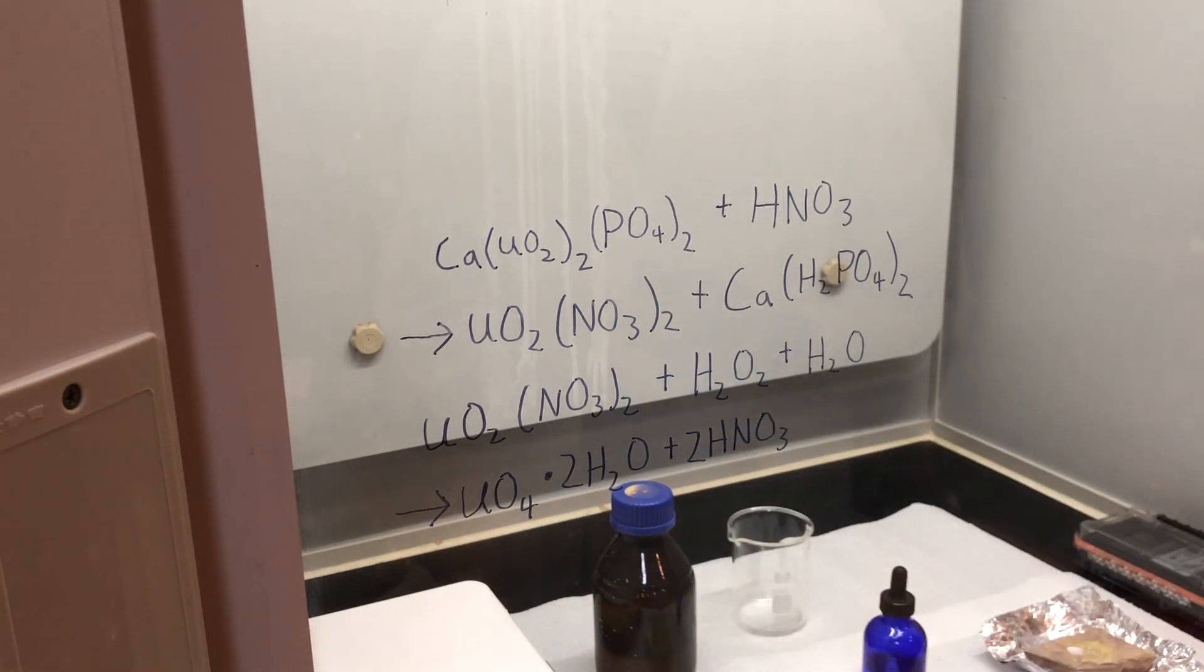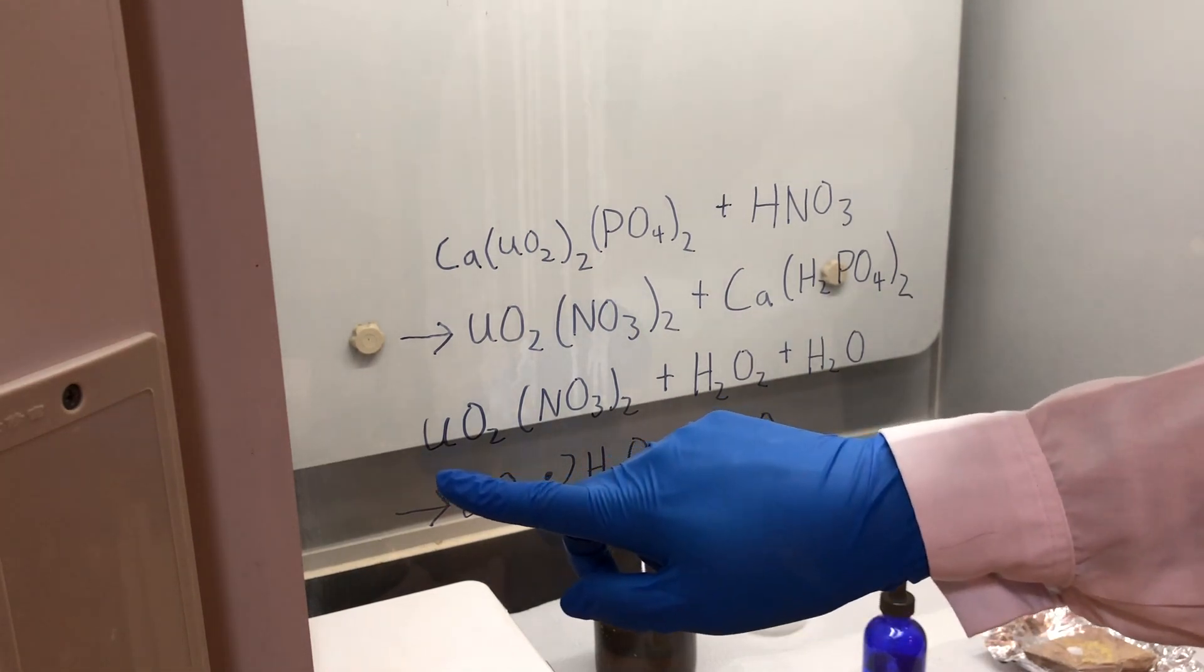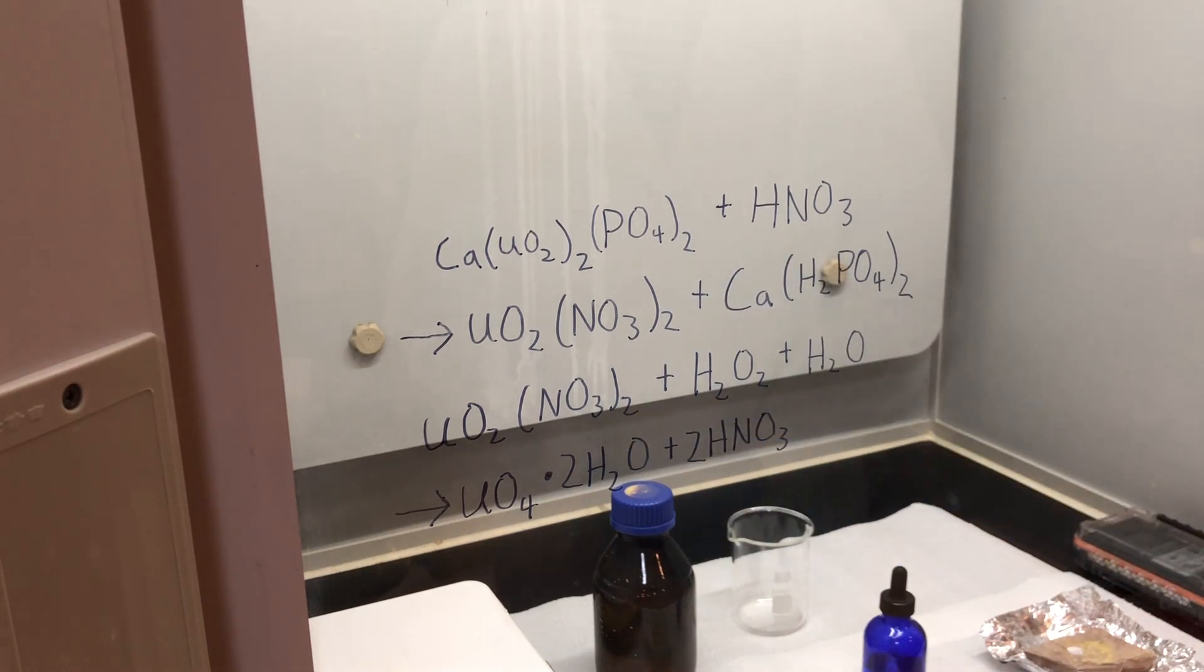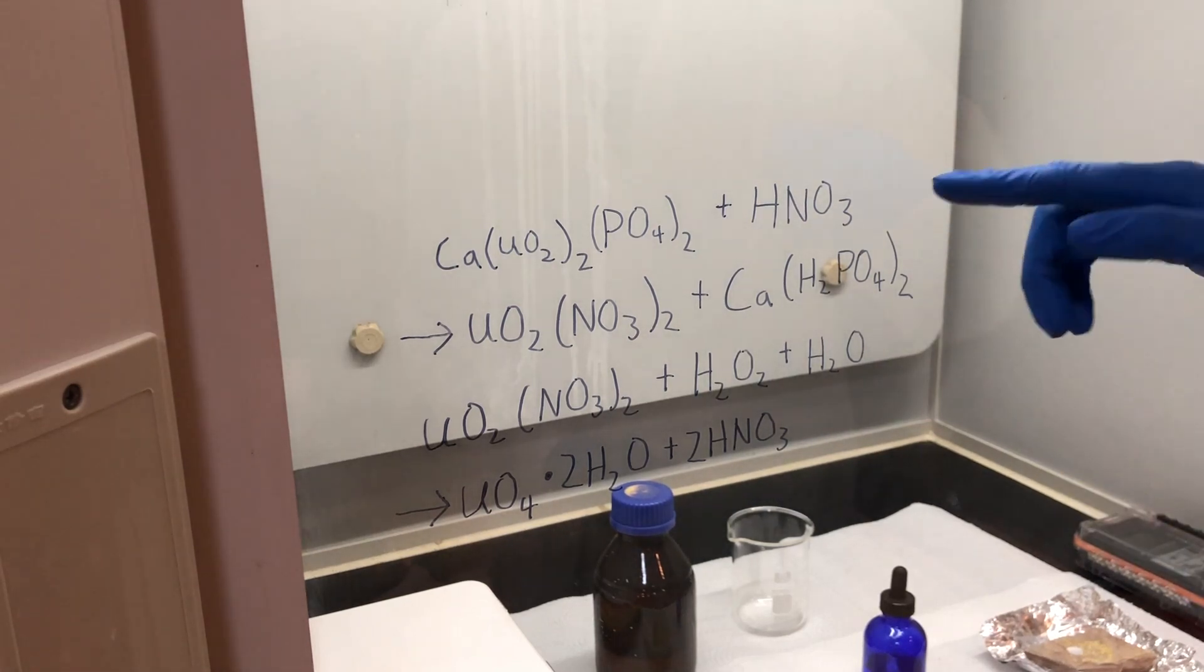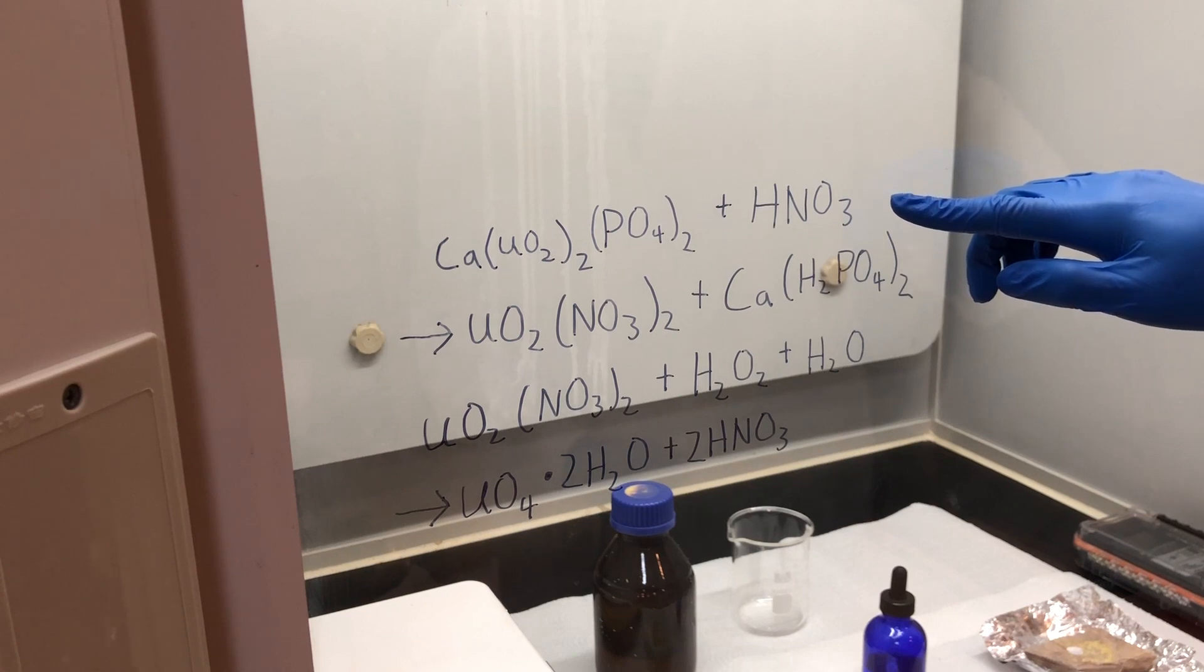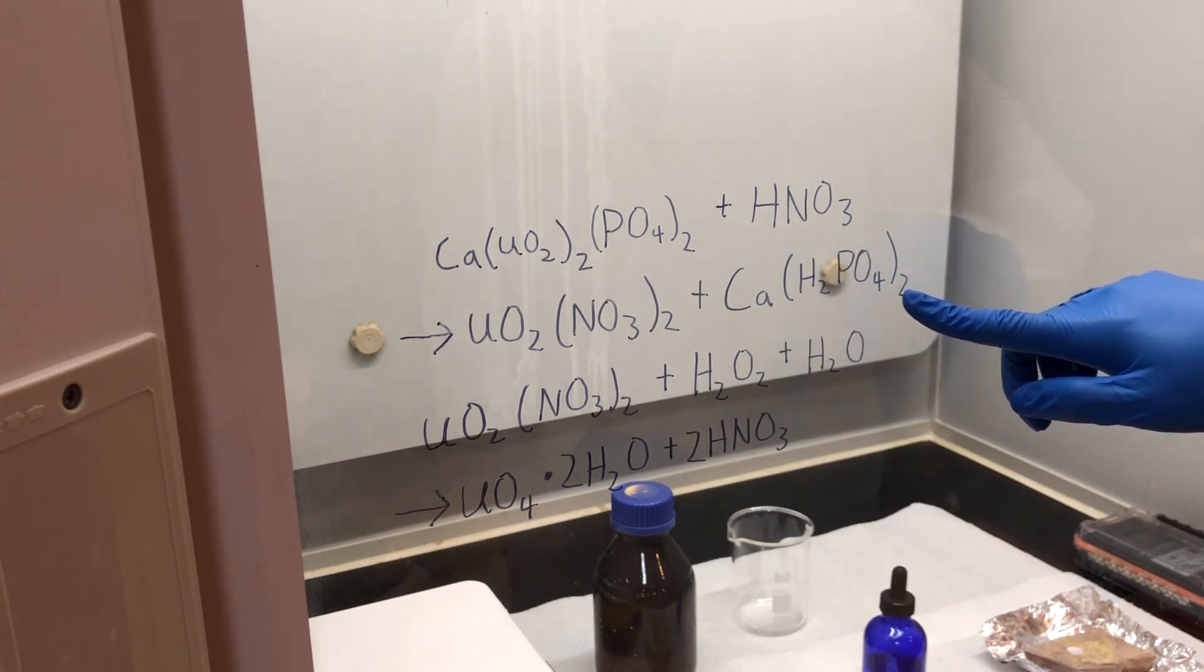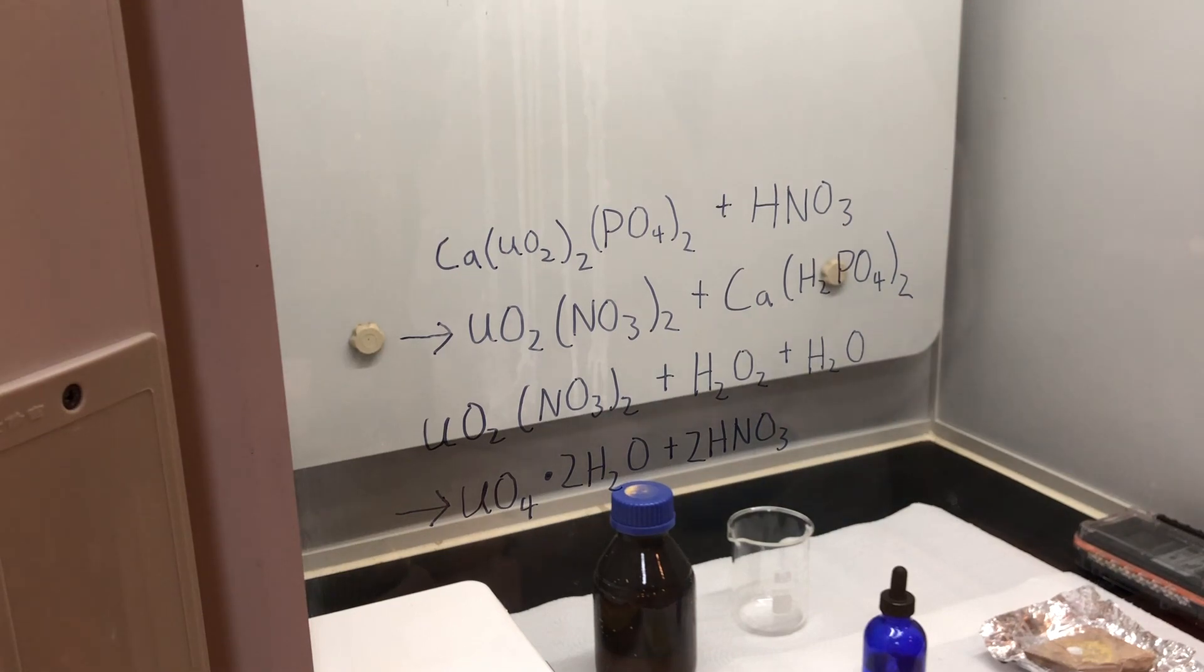This separates it out from the other transition metals because uranium peroxide is one of the few inorganic peroxides that's not soluble in water. We could also have reacted the uranium nitrate with ammonia to form the uranium-ammonium complex. However, that would not have worked in our specific case because by increasing the pH with ammonia, we will be precipitating out calcium phosphate as well, and this will mess up the separation.